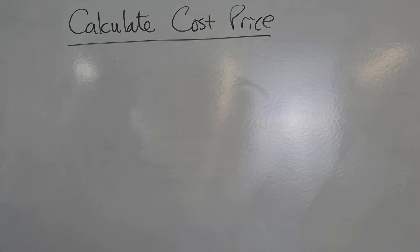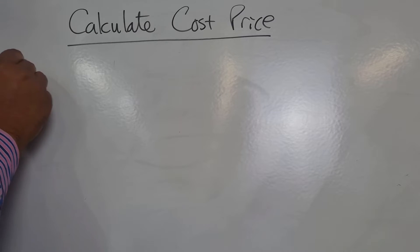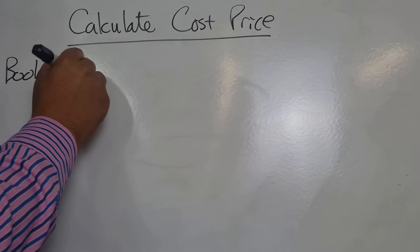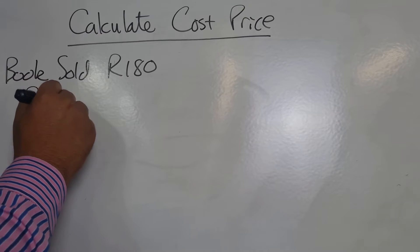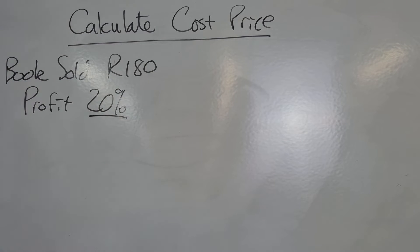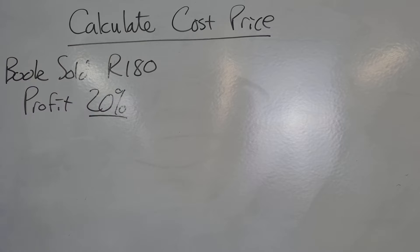Hi there learners. We continue with our series on profit, and we're talking now about how to actually calculate the cost price if you are given the selling price and you are given the percentage. So let's have a look at this. They tell us that you sold a book for 180 rand — a nice book — and your profit was 20 percent. So we have the percentage profit and we have the selling price.